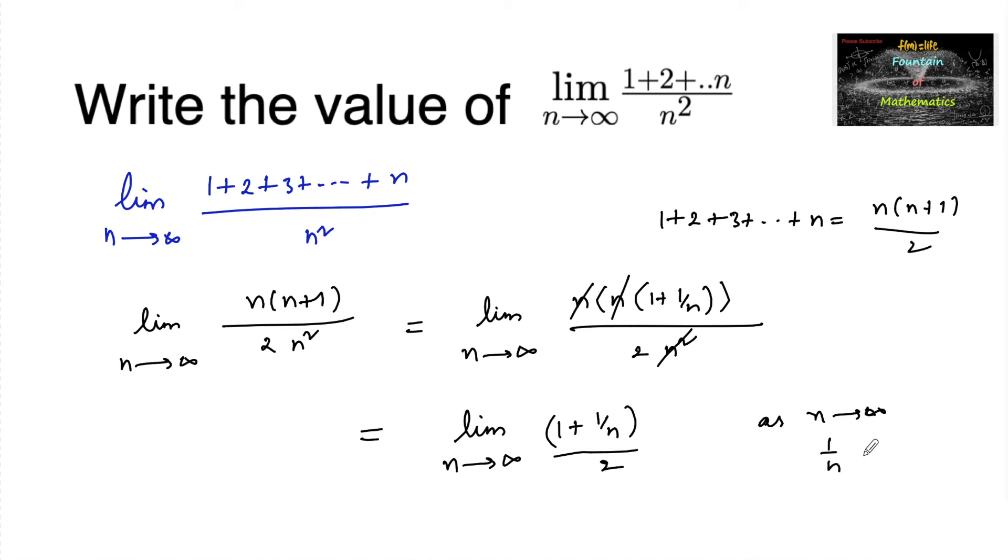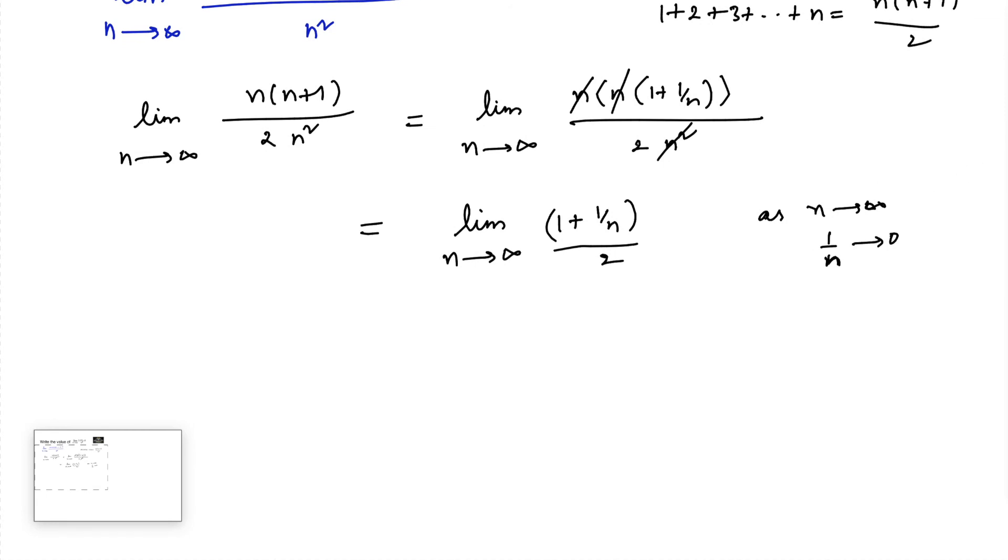1 upon n tends to 0, so we can give the answer here: 1 plus 0 upon 2, that is 1 upon 2. So 1 upon 2 is the answer for the given limit.